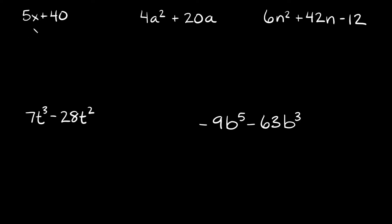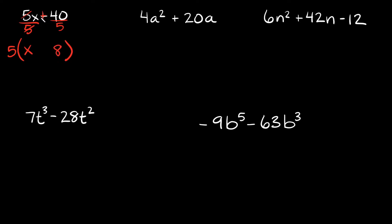Let's run through some examples. Starting with the first one: 5x plus 40. The biggest term we can pull out from both of these is 5. So we divide both sides by 5 — pull that 5 out, write your parentheses, and simplify. 5x divided by 5 gives us just x, since the 5's cancel. Then 40 divided by 5 is 8. Bring the plus sign down. So your factored answer is 5 times the quantity x plus 8.